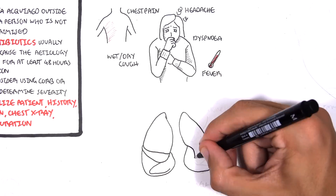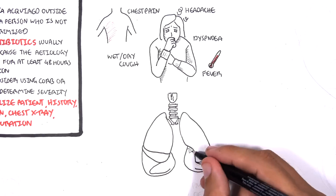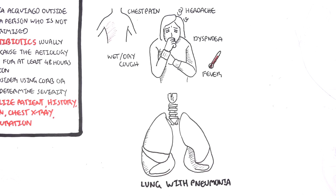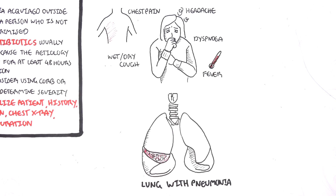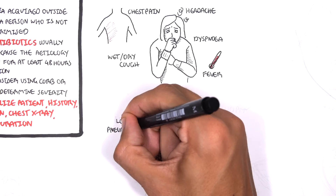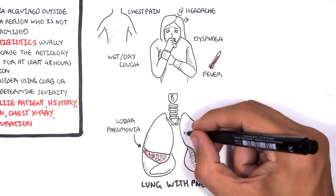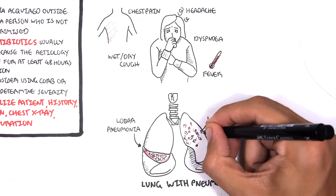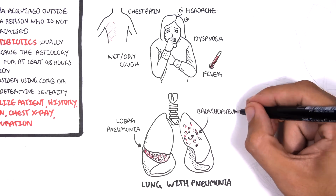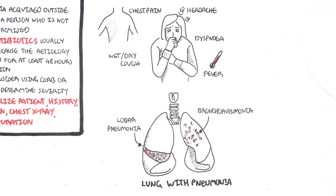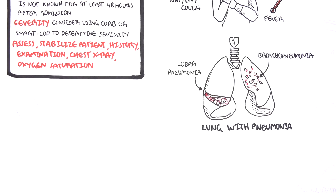Looking at a lung with pneumonia, it can present as either infection and inflammation affecting a lobe of the lung — this is known as lobar pneumonia — or the inflammation can affect patches throughout the lungs within the airway itself, known as bronchopneumonia. These findings might not be visible on the chest x-ray, and it's important to know this.